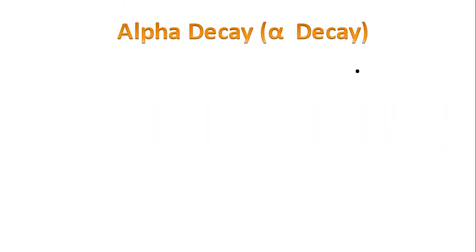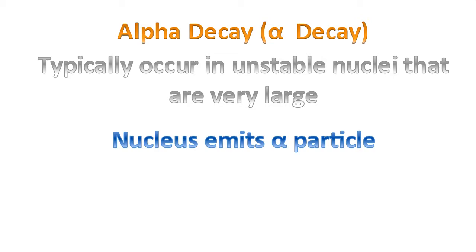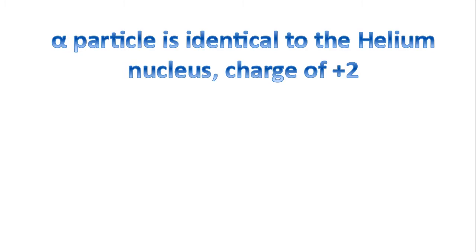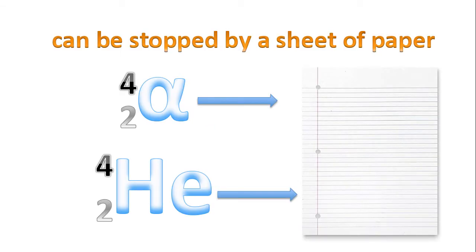Now let's get to the specifics of an alpha decay. An alpha particle consists of two protons and two neutrons, and is charged. The alpha particle is identical to the helium nucleus, with a charge of 2+. We know that alpha particles travel at relatively slow speed, and they can be stopped by a sheet of paper, and even air. The symbol we use for the alpha particle — there are two different symbols: the alpha symbol with a 4-2, or helium with a 4-2.